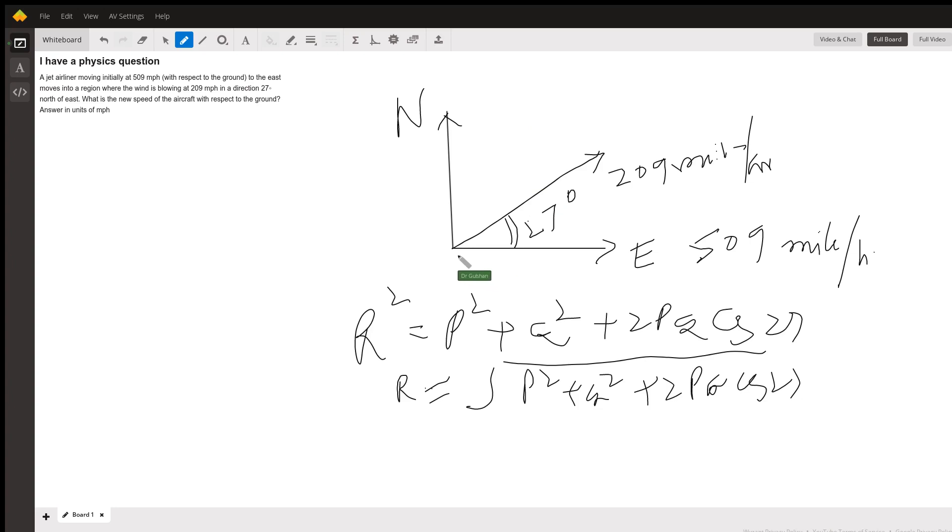The jet airliner is moving to the east as shown here and there's a wind going in the north of east direction at an angle of 27 degrees and the wind speed is 29 miles per hour and we have to get the speed of the jet airliner with respect to the ground.